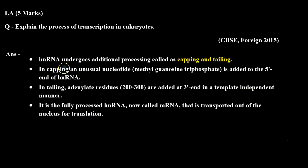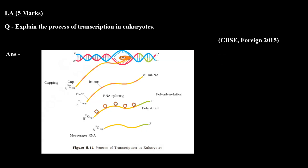When the RNA moves from the nucleus to the cytoplasm, capping and tailing modifications are needed. In capping, a methyl guanosine cap is added to the 5' end of the hnRNA. In tailing, called polyadenylation, adenylate residues of around 200 to 300 are added at the 3' end, and this addition does not depend on the RNA sequence.